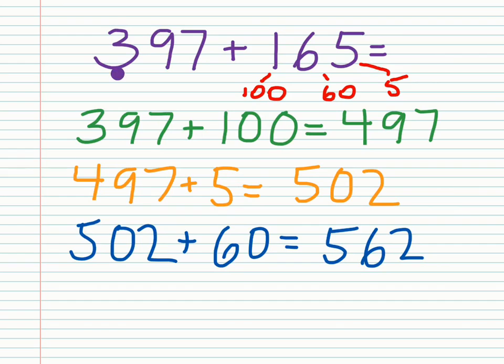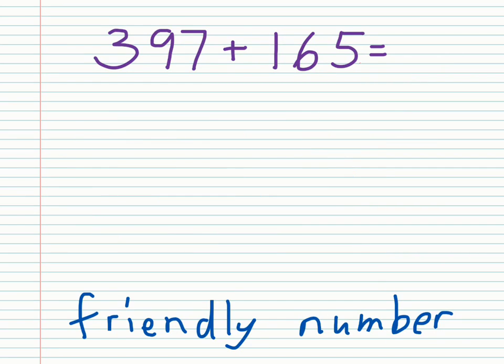So let's take the same two numbers and look at it. I'm going to break 165 apart in a different way, because what I see here is 397 is very close to a friendly number. It's almost at 400, a multiple of 100. So if I can just get it to 400, the rest of the addition will be easy.